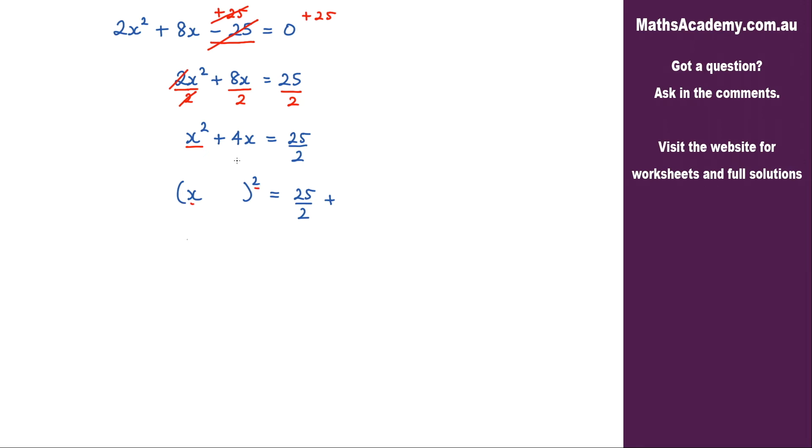We then need to look at the coefficient of the x term. That is 4. It's positive so we know we're going to have a positive here, and we take that coefficient. So we've got the 4 and we divide it by 2. 4 divided by 2 is 2.